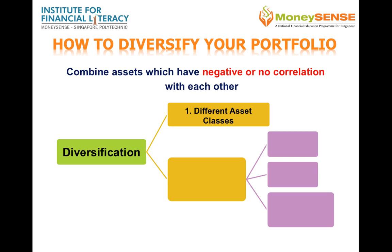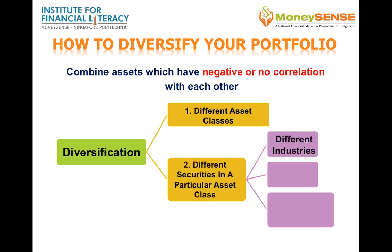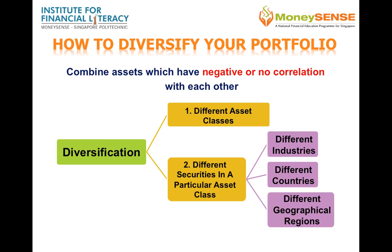Diversification can be achieved by combining assets which have negative or no correlation with each other. You can diversify your portfolio by investing in different asset classes — for example, bonds do better than equities in times of recession — or in different securities of different industries, countries, and geographical regions within a particular asset class. For example, cyclical sectors like airline companies do better than defensive sectors like food companies and utility companies during periods of strong growth. When you spread your investments across assets with low to negative correlations, you can effectively diversify the specific risk inherent to a particular asset, allowing you to have a portfolio that can weather the ups and downs of economic cycles and market volatility.